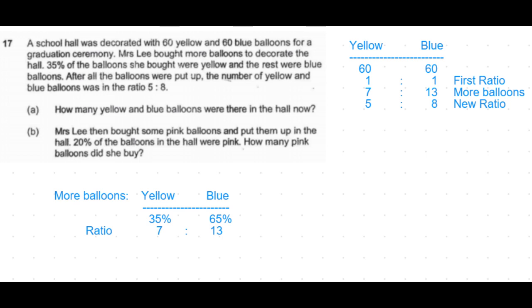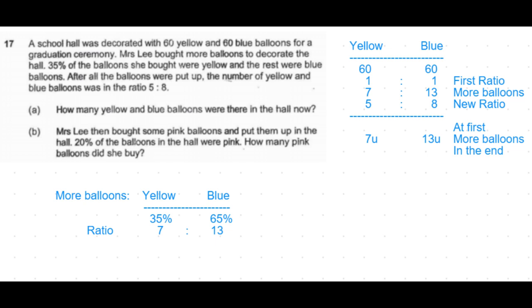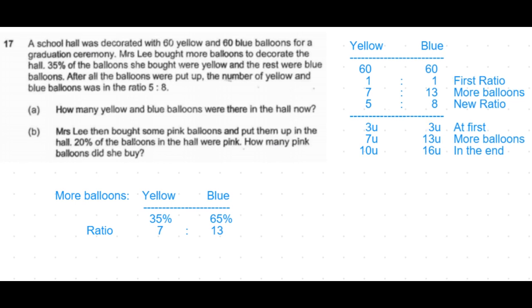Let's assume the more balloons added are 7 units and 13 units. Now we put them in terms of units. Since 13 units after adding cannot become 8 units in the new ratio, we try scaling 5:8 — it's the same as 10:16. So we try 10 units of yellow and 16 units of blue. Yellow has raised from 7 units to 10 units, which is a 3-unit increase, and blue from 13 to 16 units, also a 3-unit increase. That's what we want, since the initial ratio is 1:1 — both increases should be equal.